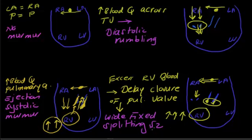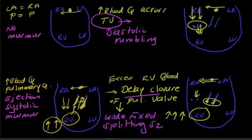So there are four features to remember: wide fixed splitting of S2 because of delayed closure of the pulmonary valve; diastolic rumbling because of more blood across the tricuspid valve; ejection systolic murmur because of more blood across the pulmonary artery; and basically in ASD as a pathology, you will not hear any murmur.